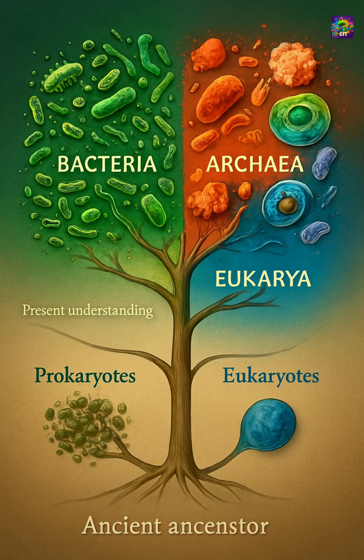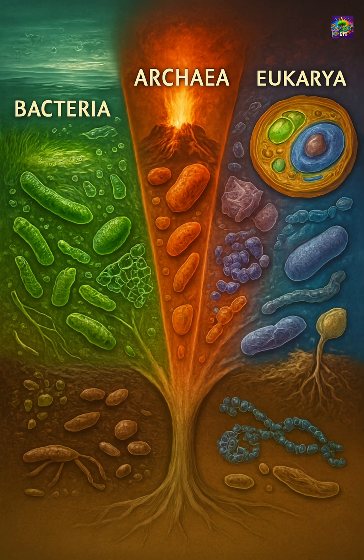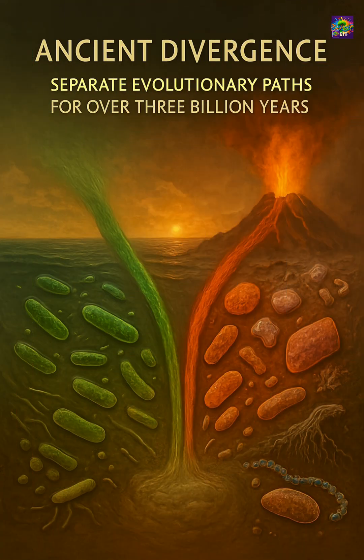In 1990, Carl Woese proposed the three-domain system — bacteria, archaea, and eukarya — a classification that redefined our understanding of life's evolutionary history. Bacteria and archaea may seem like close cousins, but they've followed separate evolutionary paths for over three billion years.